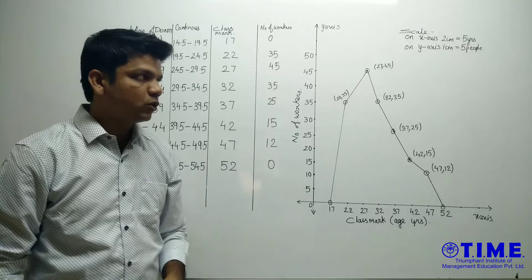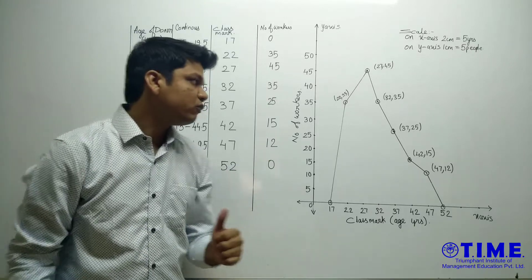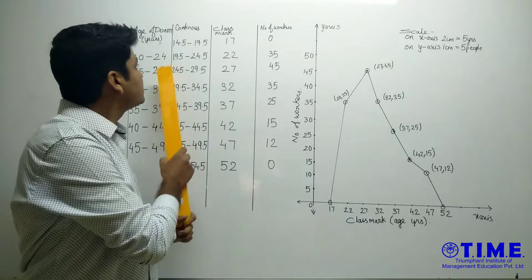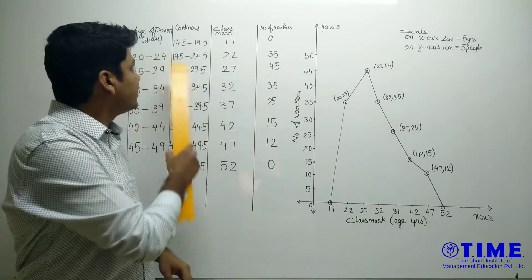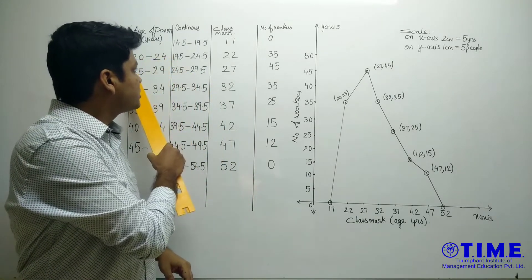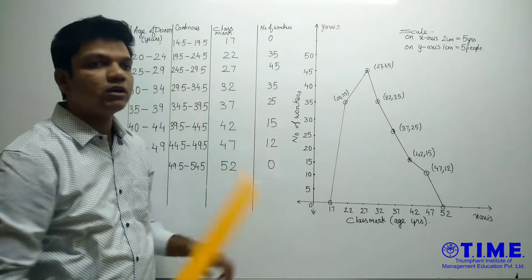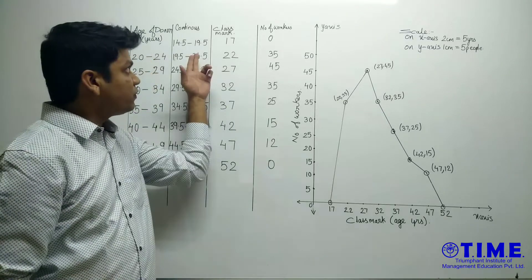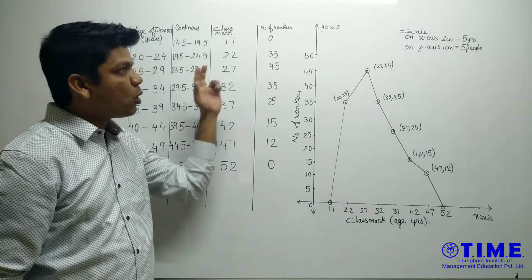First starting with the frequency polygon. Whenever they give you a table, first thing you should check is whether the table is in continuous form or not. Like 20 to 24 and it is starting with 25, this is not in continuous form. So you should make it in continuous form.